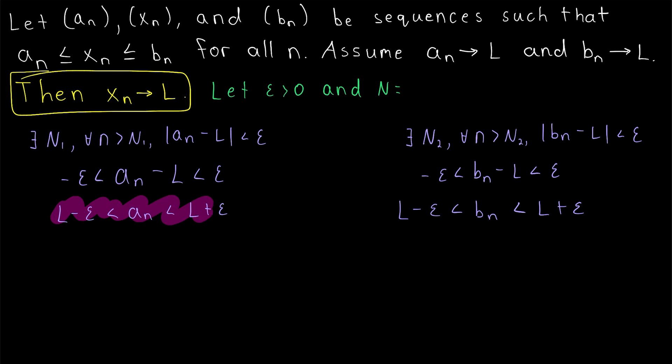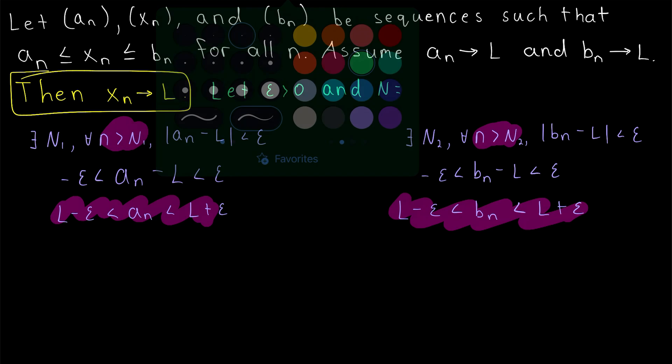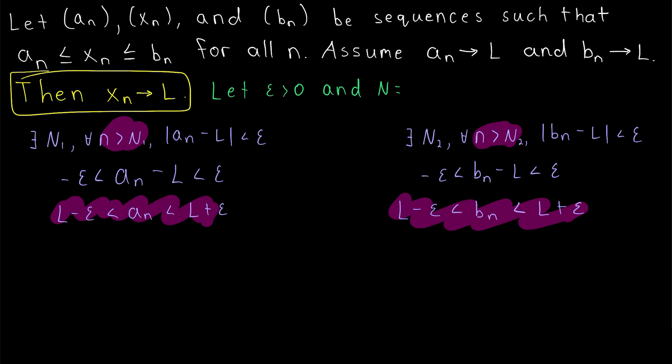We would like to be able to guarantee both of these inequalities hold, which means we need n to be greater than big N_1 and greater than big N_2. So for our proof, we'll let big N be the maximum of those two numbers.